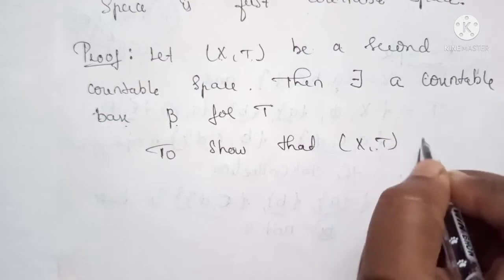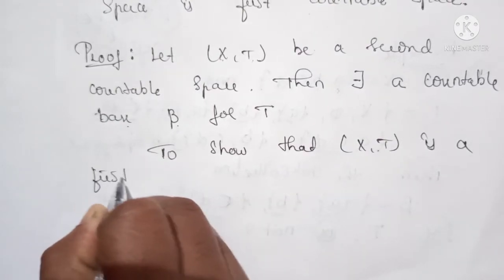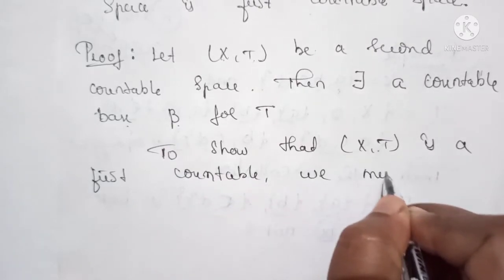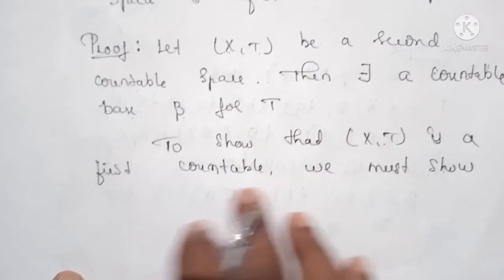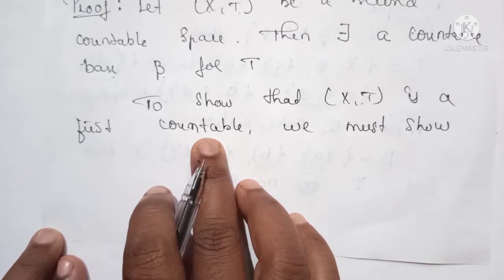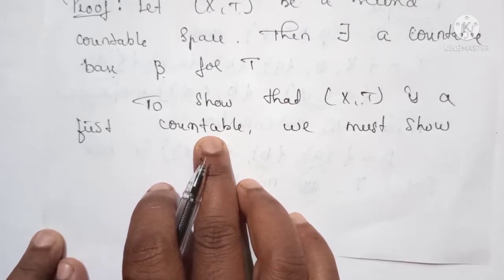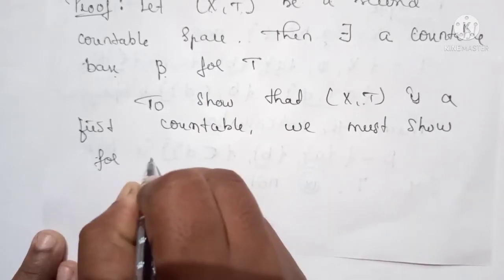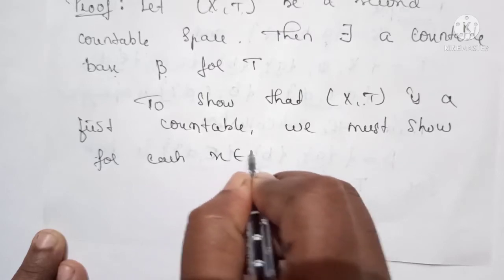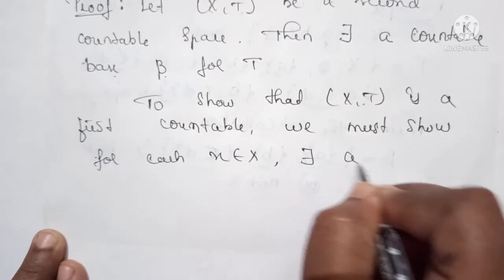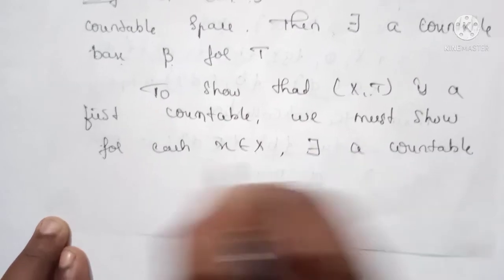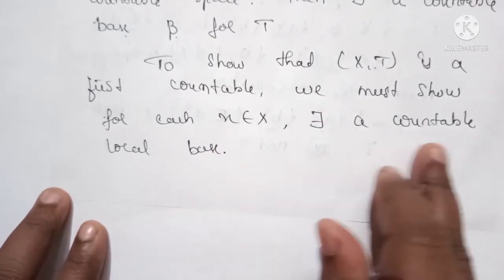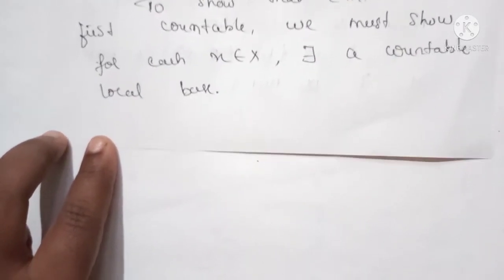Now to show that (X, T) is first countable, we must show that there exists a local base for each point. That is, for each x belonging to X, there exists a countable local base.